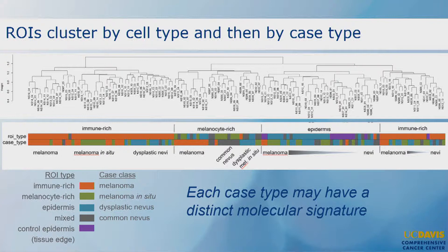We took all the expression data from the sequencing and clustered it. We were quite pleased that the data initially clustered by region type. Within those regions, they clustered fairly well — for example, the melanomas, shown in orange, clustered together. Because of this clustering, we felt some confidence that there's probably a signature we could mine out and use for prognosis or diagnosis.